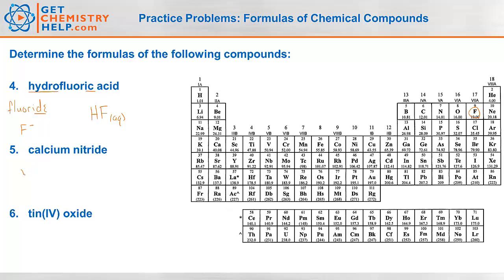Calcium nitride. Calcium is Ca — it lives in group 2, so it's 2-positive. Nitride: '-ide' means non-metal by itself. Nitrogen is 3 away from neon, so it's 3-negative. To balance a 2-positive and a 3-negative, I use the crossover rule: 3 calciums and 2 nitrides. Three calciums give 6-positive, 2 nitrides give 6-negative — that balances out. The formula is Ca₃N₂.